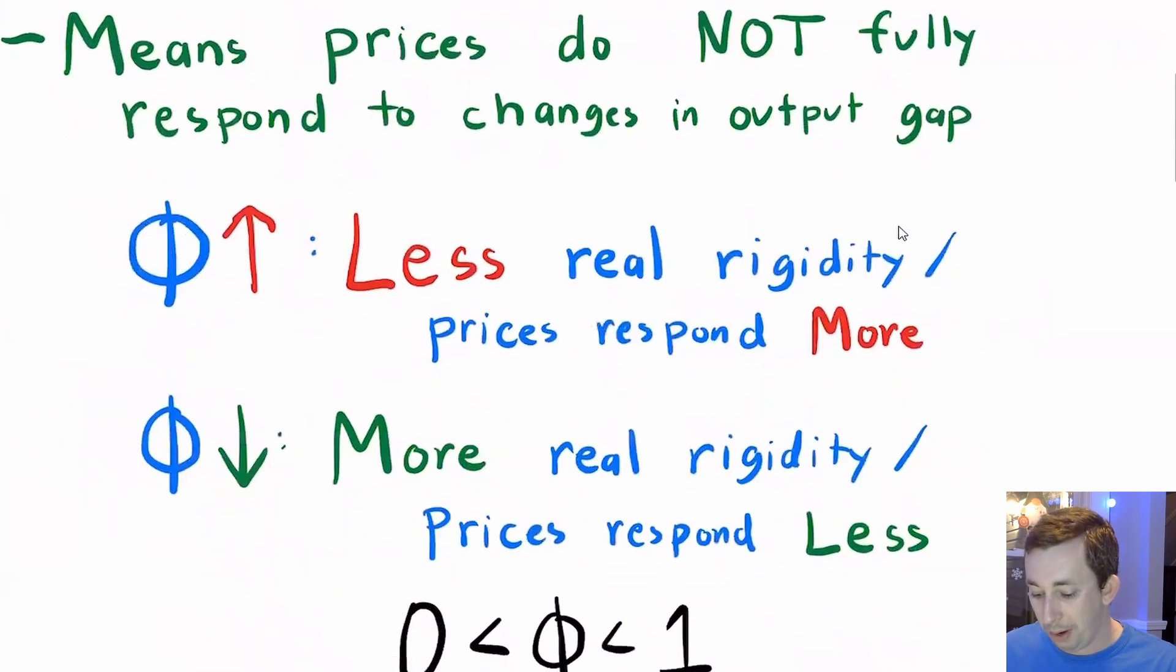But for our purposes, what it means is that prices do not fully adjust when we have changes in the output gap. So if we're in a boom or in a recession, if our output gap is getting larger or getting smaller...